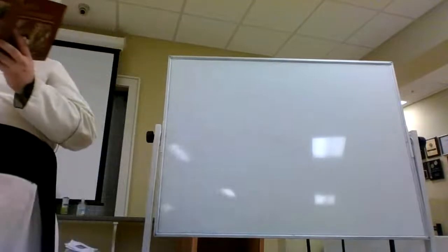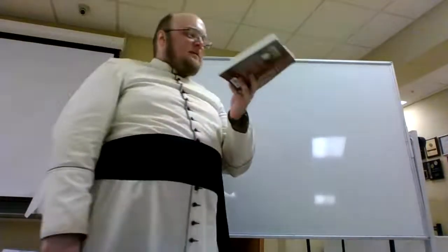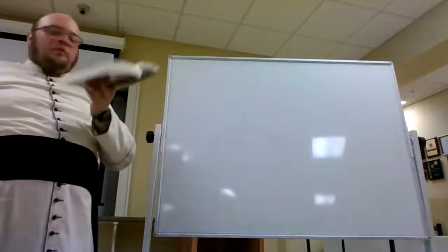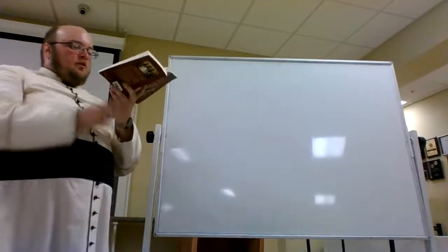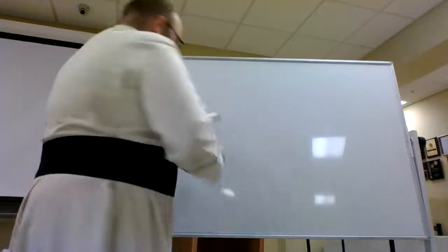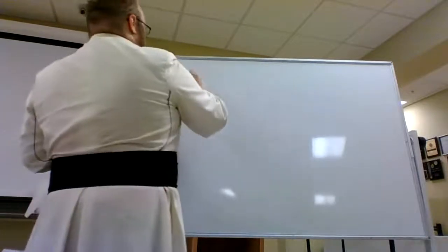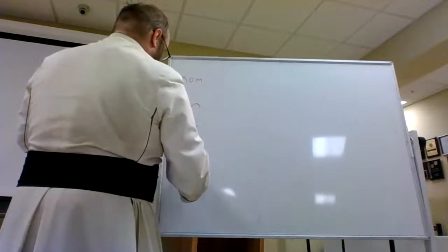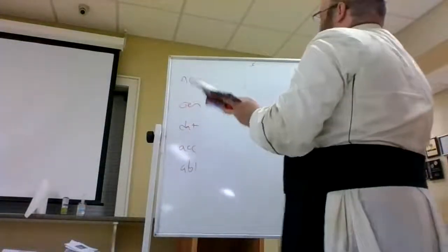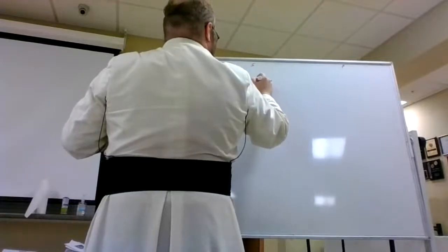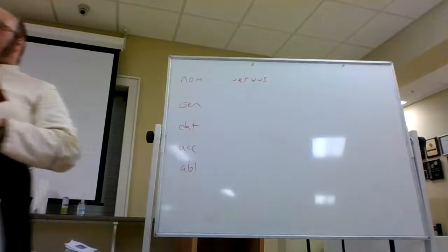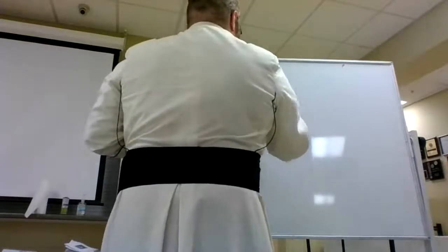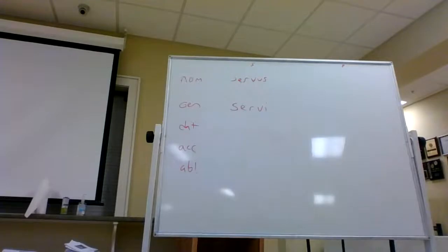We're going to look at the second declension. The rule is: all nouns that end in -i in the genitive singular belong to the second declension. If they end in -us, -er, or -ir in the nominative singular, they are masculine. If they end in -um, they are neuter. We'll use servus as our model — servus means a servant or slave, but a male one.